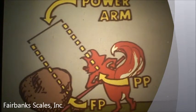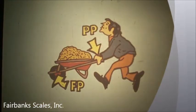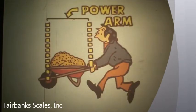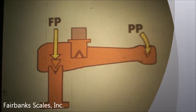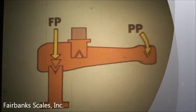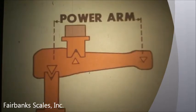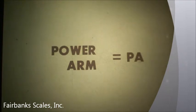The power arm is the distance from the fulcrum point to the power point. On the wheelbarrow, the fulcrum point is the wheel and the power point is the handles, making the power arm the distance between the wheel and the handles. In this main lever, the fulcrum point is the point where the lever rests on the stand, and the power point is at the tip of the lever where the force is transferred to another part of the scale. So the power arm is the distance from the fulcrum point on the stand to the power point at the tip of the lever. Power arm is abbreviated PA.